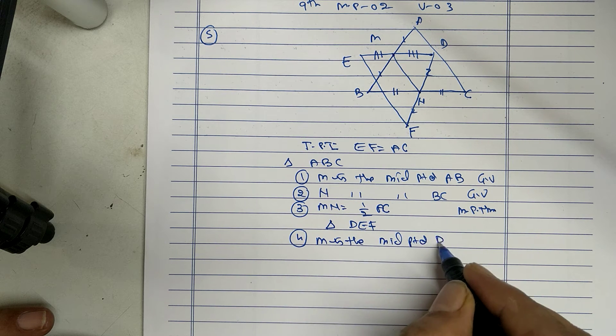M is the midpoint of DE. N is the midpoint of DF, given. Therefore, MN is half of EF.